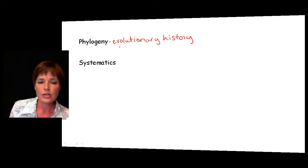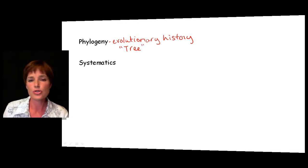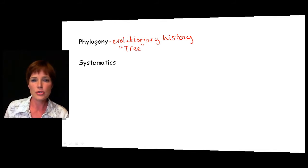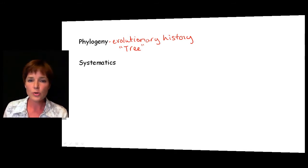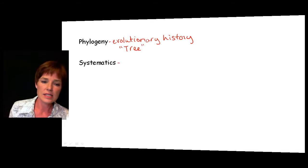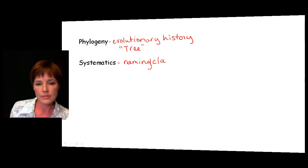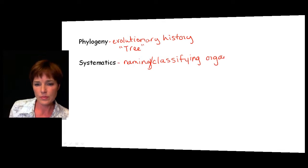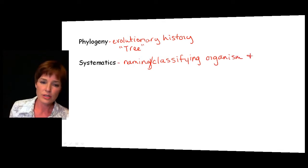By evolutionary history we're really talking about something that typically has a tree-like structure. Think about a family tree that shows the relationships among individuals and also shows their ancestors. We're going to have organisms, we're going to be able to see their ancestors, and then what other organisms might also share those same common ancestors. Systematics is the science of naming or classifying organisms and determining their evolutionary history.